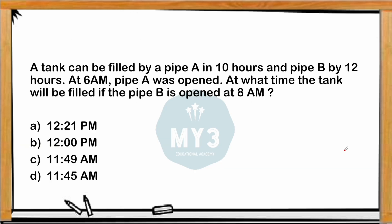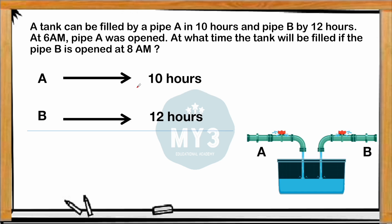Question 1: A tank can be filled by pipe A in 10 hours and pipe B in 12 hours. At 6 AM pipe A is opened. At what time will the tank be filled if pipe B is opened at 8 AM? The individual times are 10 and 12 hours. The LCM of 10 and 12 is 60, so I assume the total tank capacity is 60 liters.